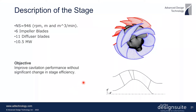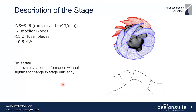This was a fairly high specific speed mixed flow stage with a specific speed of 946 in terms of rpm, meters, and cubic meters per minute. There were six impeller blades and 11 diffuser blades. The baseline stage already had quite high efficiency, so the purpose of this redesign was to improve cavitation performance without any significant change in efficiency, since what's good for cavitation is not always good for efficiency.